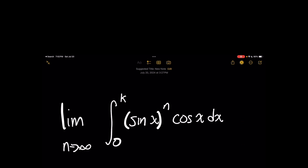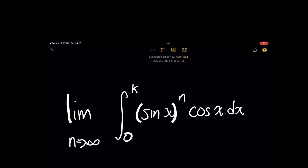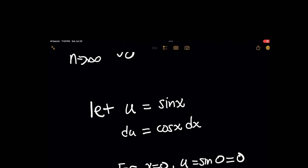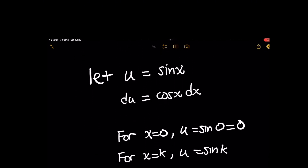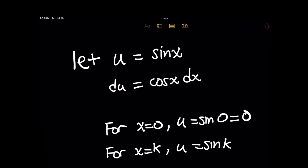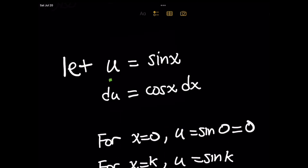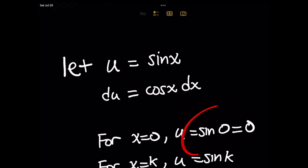Remember that the limits of integration were in terms of x, so we need to transform them to be in terms of u, because we've transformed the variable x into a variable u. The way to do this: because x equals 0 was the lower limit of integration, take the expression u equals sine of x and simply plug in 0 for x, giving u equals sine of 0.